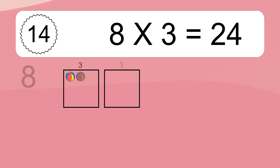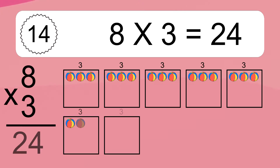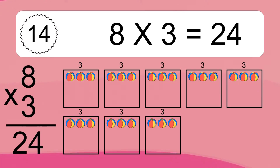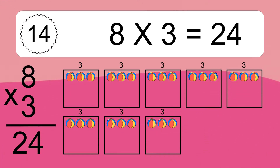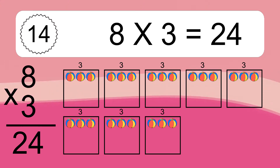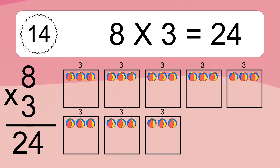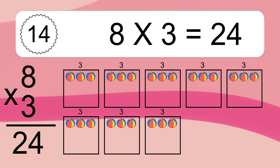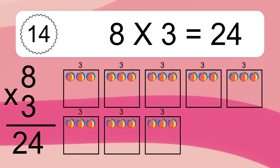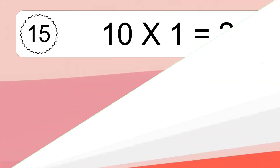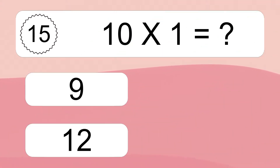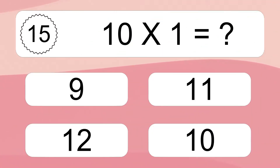Eight times three equals what? Eight times three equals twenty-four. We have eight boxes, and each box has three colorful balls inside. If you count all the balls in all the boxes together, you will have eight times three balls. This equals twenty-four balls.